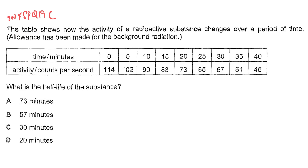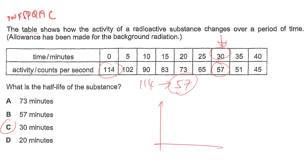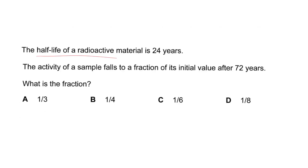In Question 4, you are given a table instead of a graph. The starting count rate is 114. After one half-life the count rate halves: 114 ÷ 2 = 57. Looking at the table, that occurs at 30 minutes, so the half-life is 30 minutes. On a graph, when count rate reaches 57 counts per second the time reads 30 minutes. The answer is C.